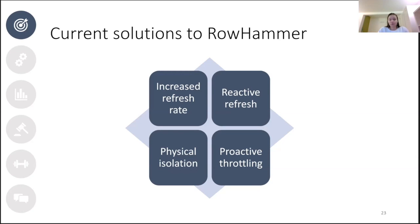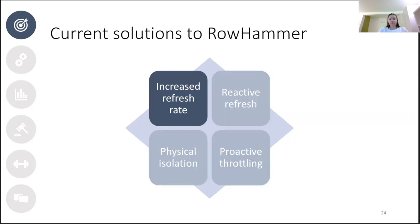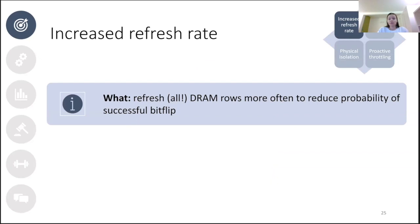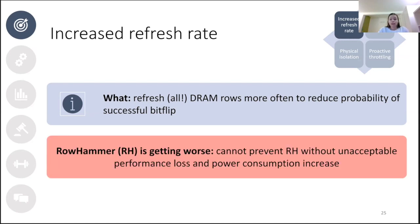Whenever there is a problem as severe as rowhammer, we want to find a solution. Over the last few years, many researchers came up with innovative ideas. First, let's look at increasing the refresh rate of all DRAM rows. Increasing the refresh rate can reduce the probability of rowhammer inducing a bit flip, but it doesn't really stop it — it only works up to a certain point. As cell size and cell-to-cell spacing decrease, the required number of row activations to induce bit flips also decreases, so we must increase the refresh rate accordingly. Unfortunately, refreshing rows takes time and cannot be done fully in parallel with handling memory requests, reducing the time available for data transfer.